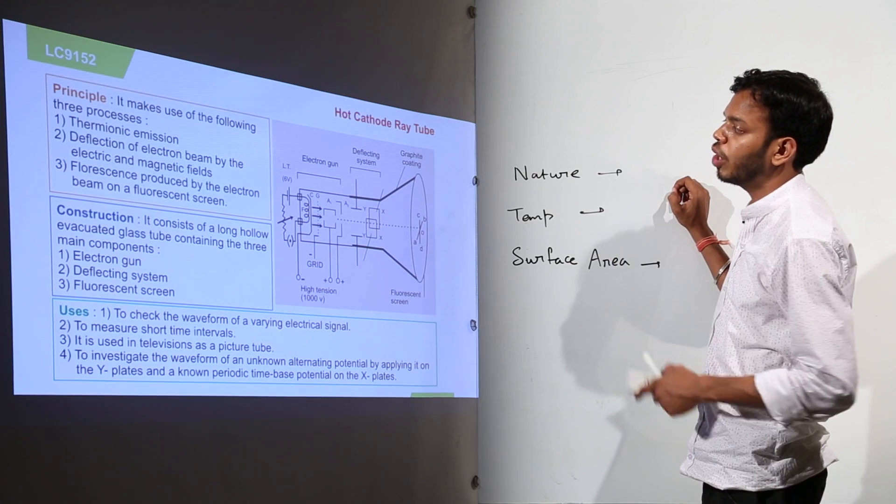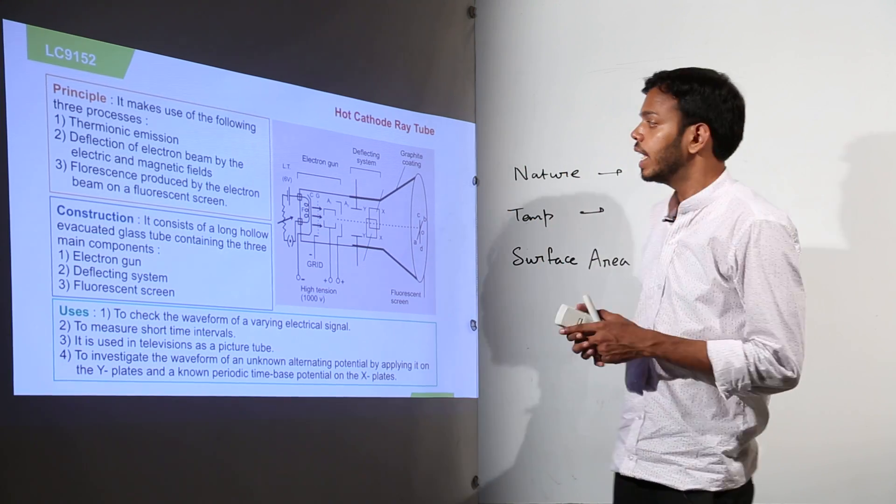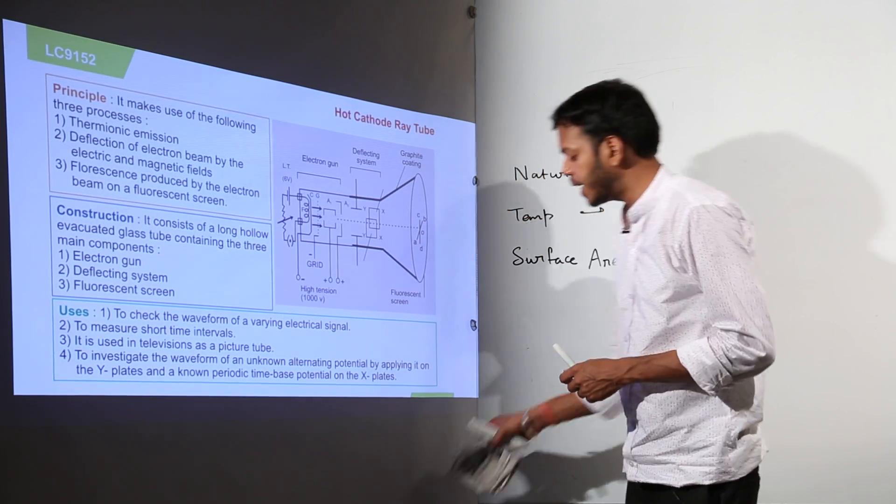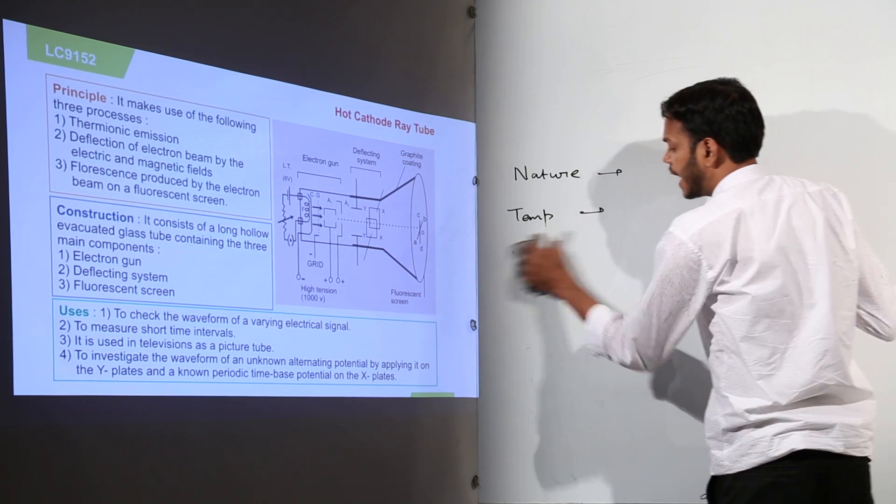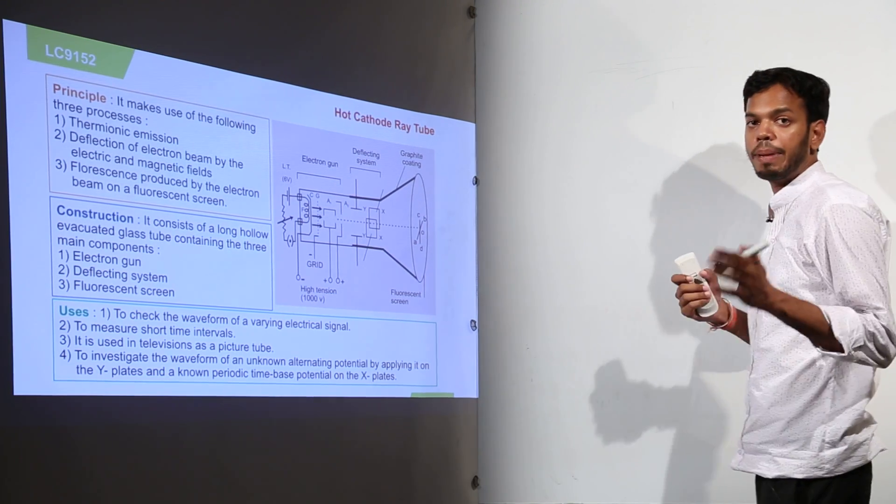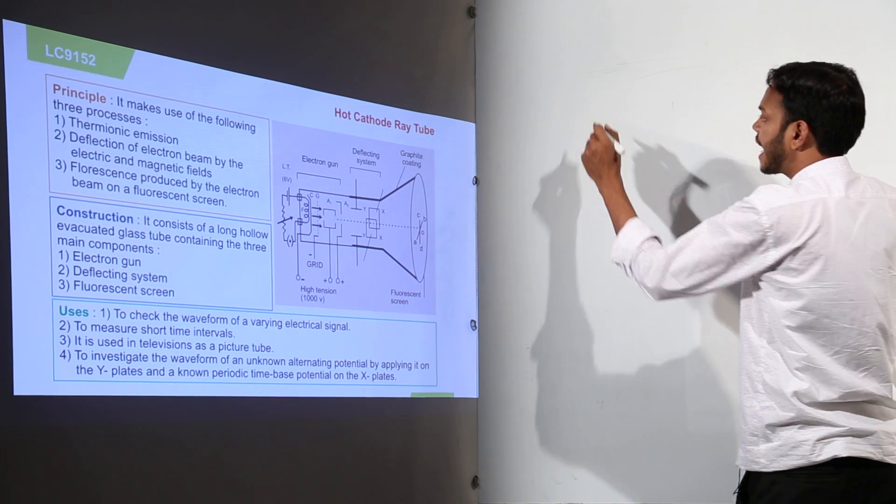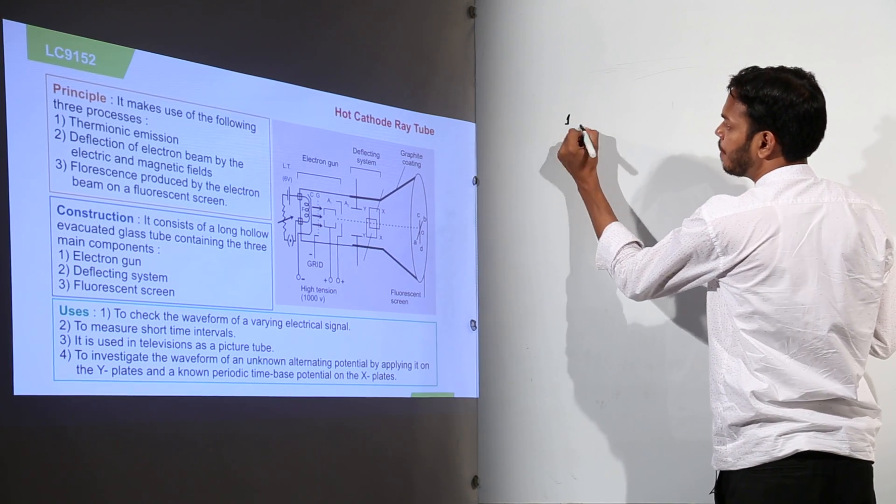Second one is deflection of electron beam by electric and magnetic field. Now I will not proceed from this point unless I will explain you clearly what is and how is deflection of electron from electric and magnetic field possible. I will explain it to you in very simple ways.